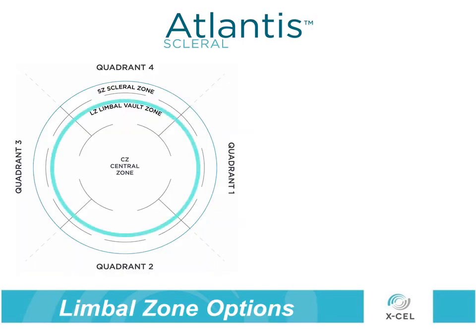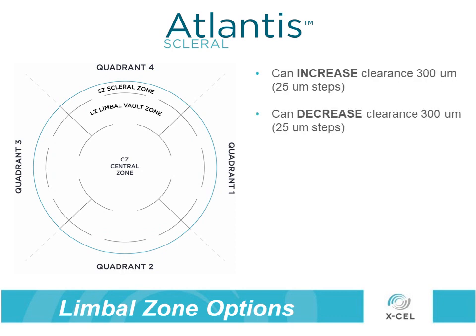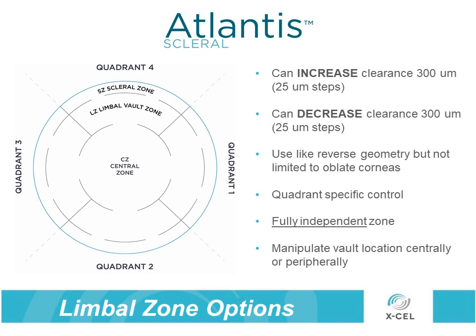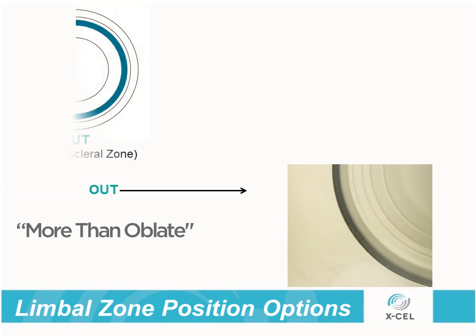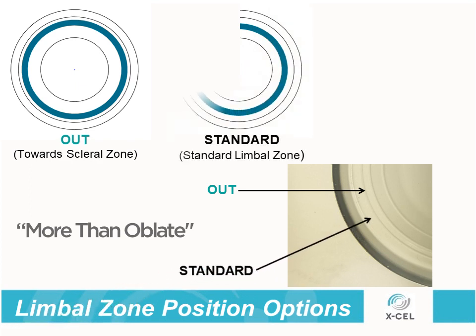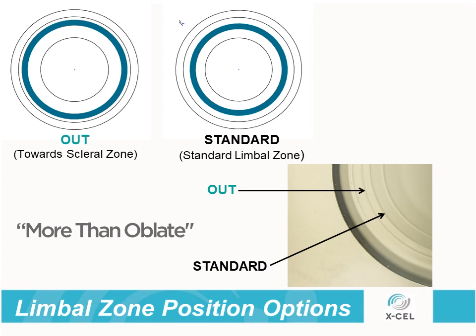The limbal zone on the Atlantis Scleral is extremely unique and customizable. The clearance in this zone can be increased or decreased 300 microns in 25 micron steps, allowing it to navigate prolate and oblate corneas with a single lens option. Furthermore, these changes can be specified in a quadrant-specific manner, allowing precise clearance 360 degrees around the mid-periphery. Another unique feature is the ability to specify the position of the clearance change made in the limbal zone region. If a change is needed near the scleral zone, the specified change can be moved to the out position. The standard position is perfect for elevations needed over post-surgical treatment zone junctions or for reductions in sag needed in the mid-periphery after vaulting a small central cone.